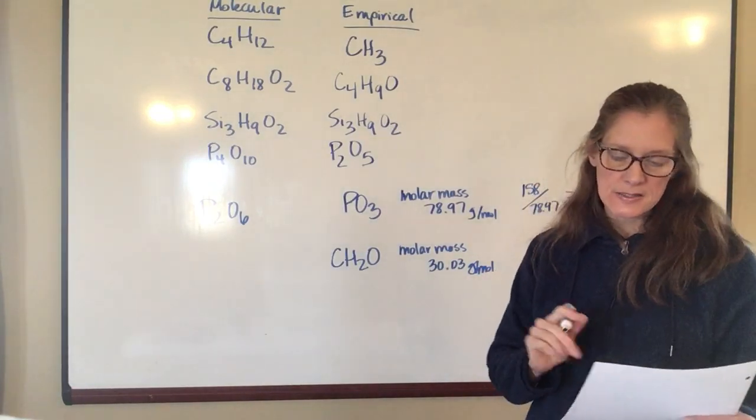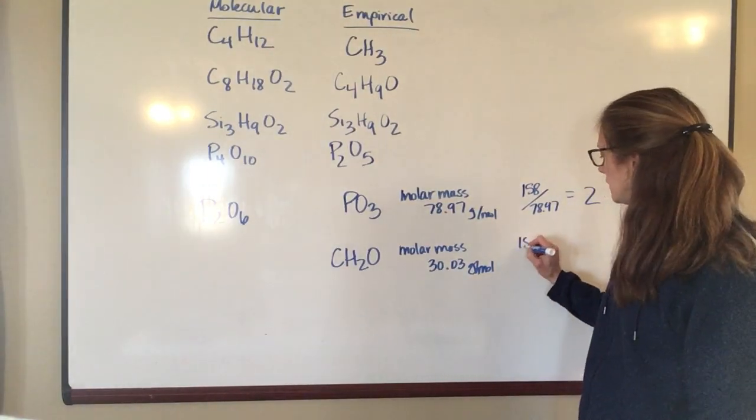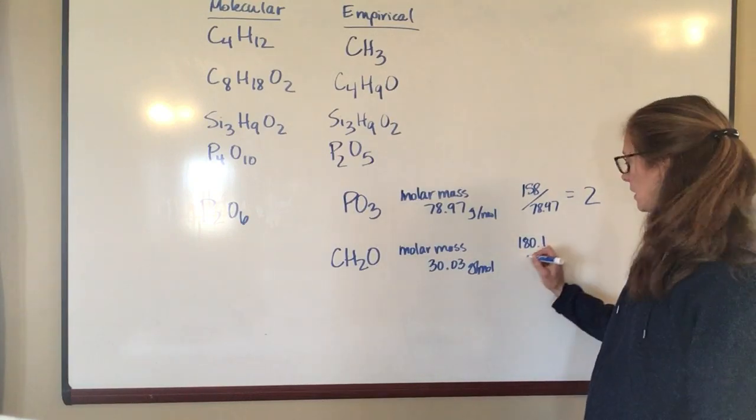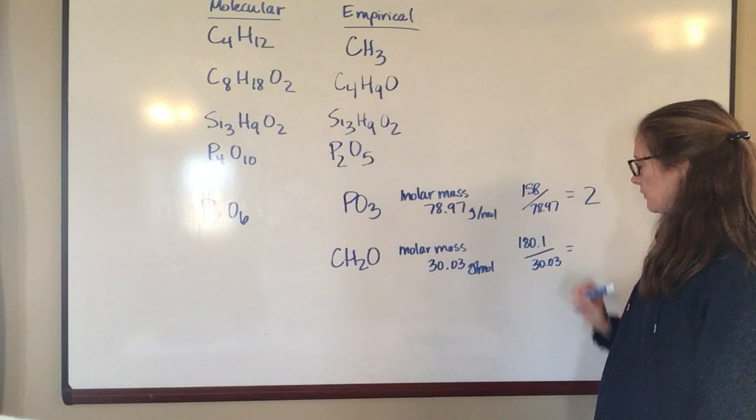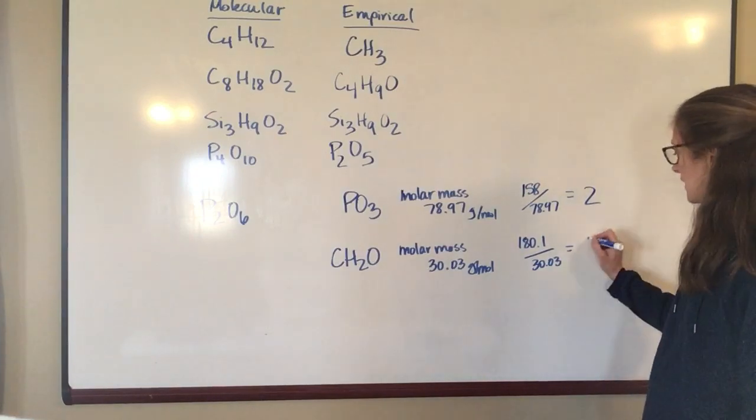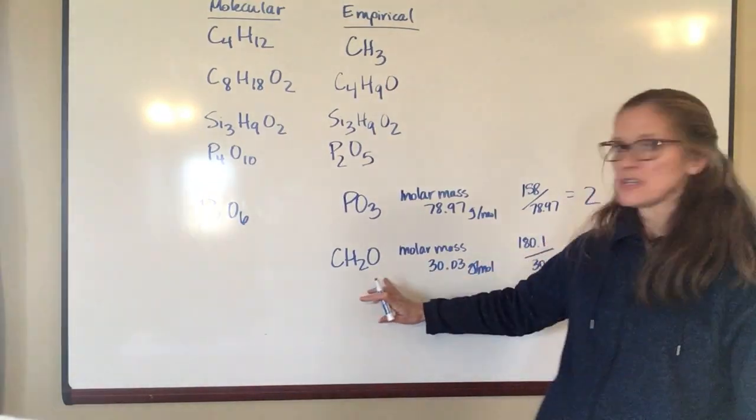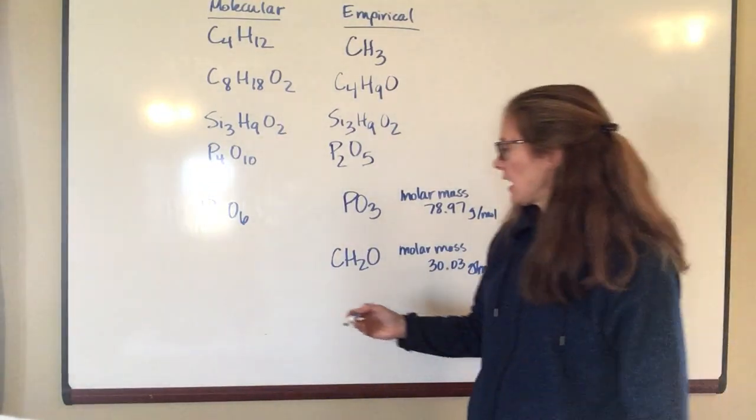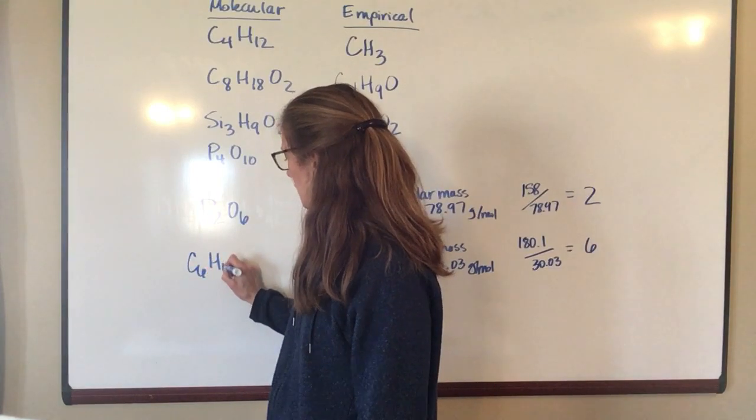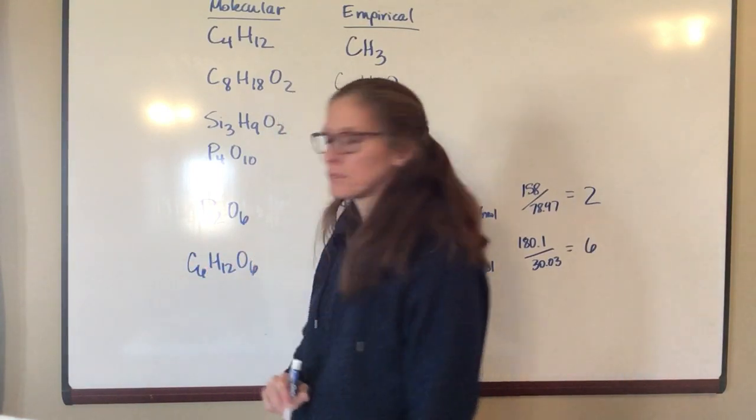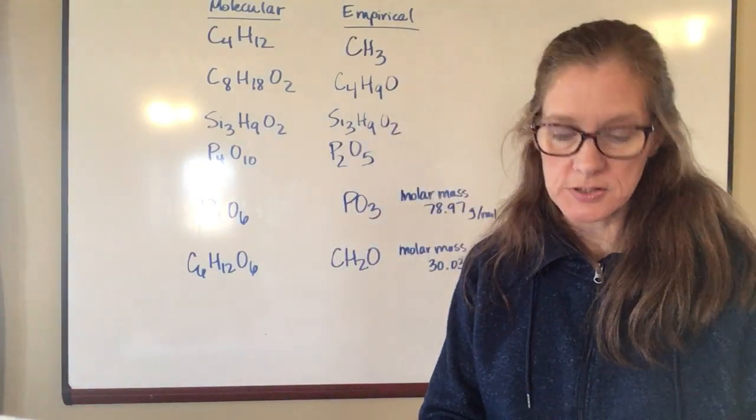Now the molar mass for the molecular formula is 180.1. So if I take 180.1 and I divide it by 30.03, you divide that out, you're going to get 6. So what that means is that you're going to have to multiply all of these subscripts through by 6. And so your molecular formula is going to be C6H12O6. And that probably looks familiar from biology because that's the formula for glucose.